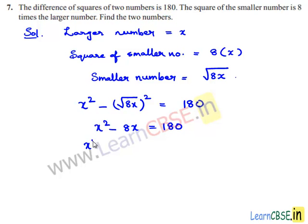Transposing 180 to the left hand side, we get x² minus 8x minus 180 is equal to 0.